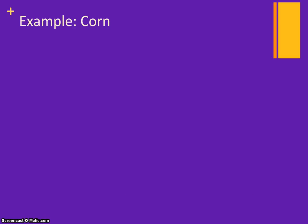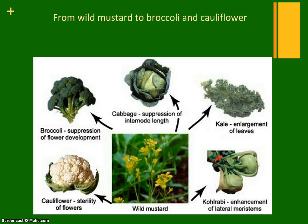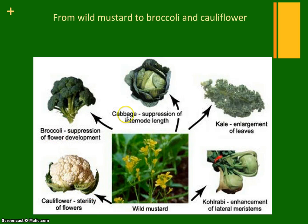Another example in plants is wild mustard. This is a wild mustard plant, and by just selecting specific traits we get cauliflower, broccoli, cabbage, kale, and kohlrabi.